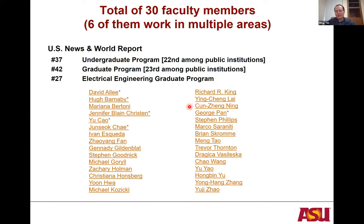I currently have two undergraduate students and one master's student working with me. That student is actually still an undergraduate this semester and wants to do a four-plus-one master's program, then continue on to a PhD.